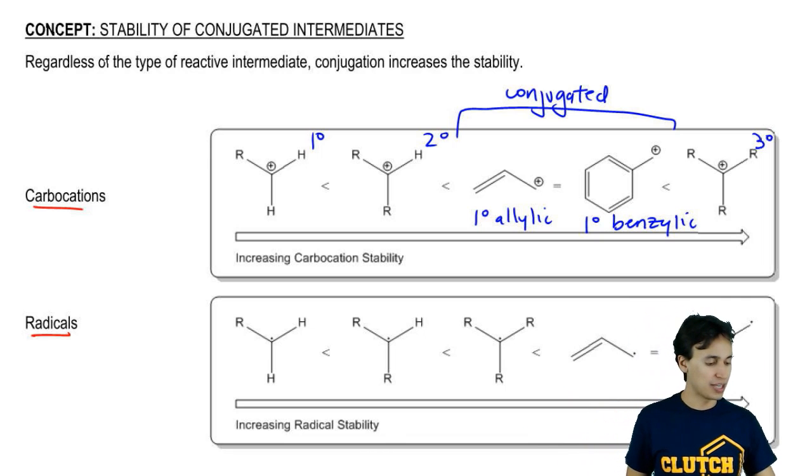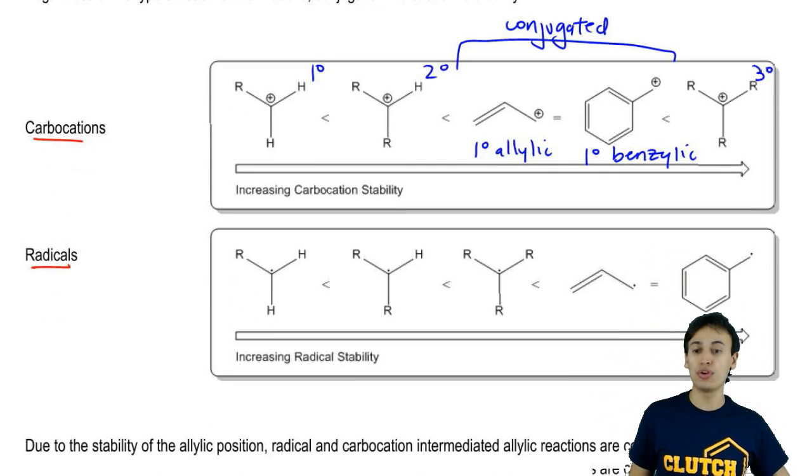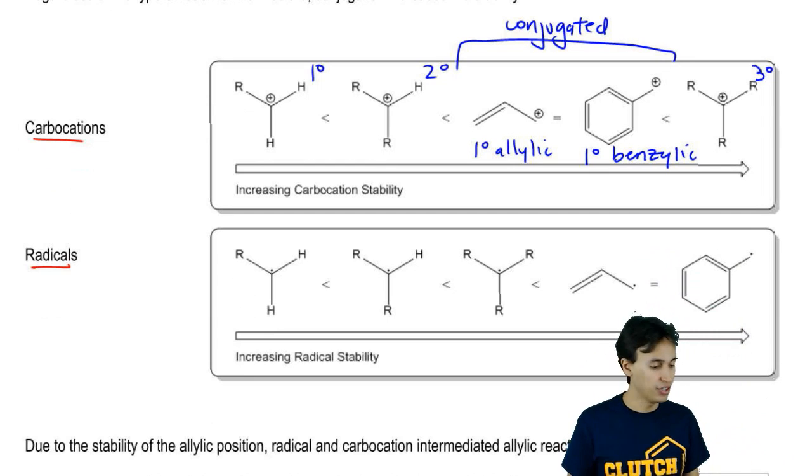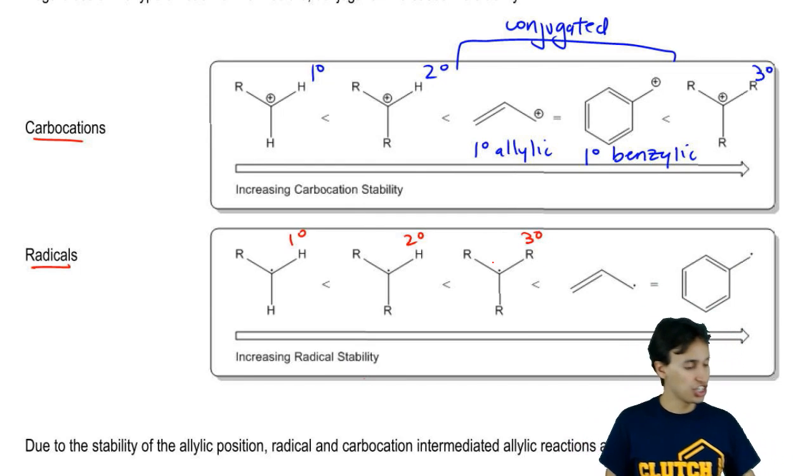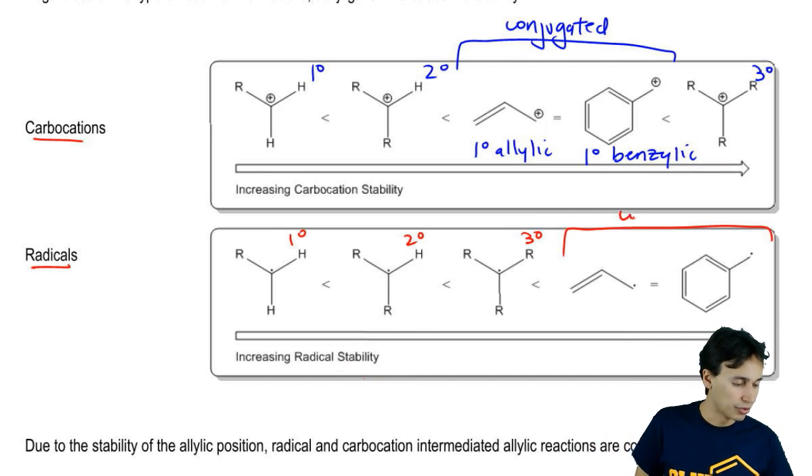Now if we look at the same trend for radicals, we notice a similar pattern which is that as you add R groups, they become more stable. As you add conjugation, they become more stable.